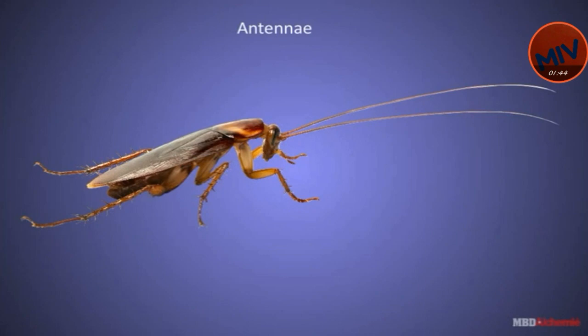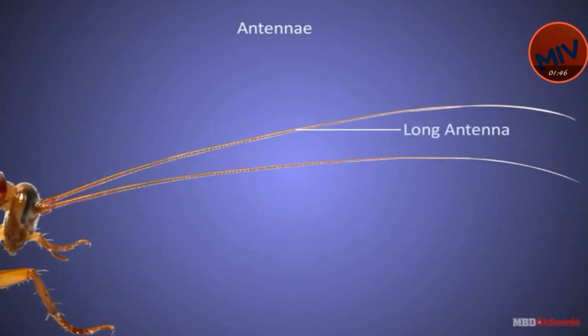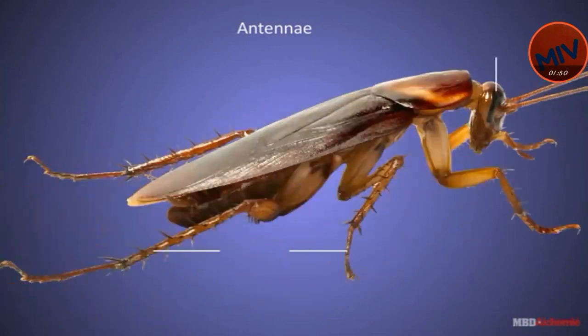Antennae: These are a pair of long, jointed, cylindrical and movable structures attached to the antennal sockets.